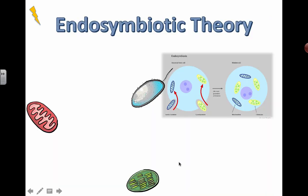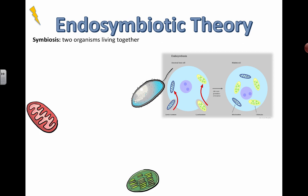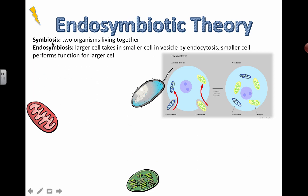Let's look at the endosymbiotic theory. Symbiosis means two organisms living together — a tapeworm parasite is an example, but that's a parasitic relationship where one is harmed. In this case, we're looking at symbiosis where two things are both benefiting from joining or living together. Endosymbiosis is similar to endocytosis: a larger cell takes in a smaller cell by endocytosis, and the smaller cell performs a function for the larger cell.